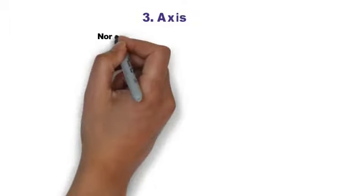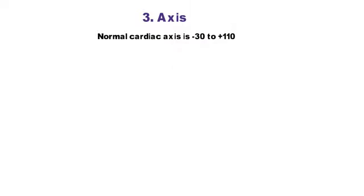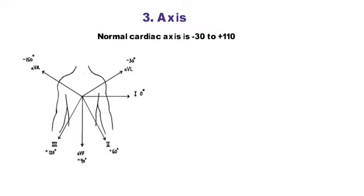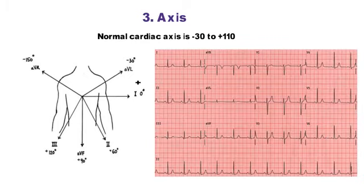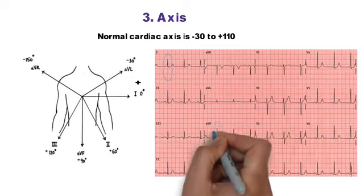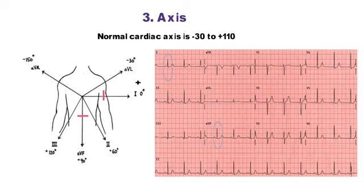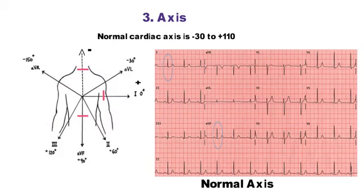Step 3 is to calculate the axis. Normal cardiac axis is from −30 to +110 degrees. The 12-lead ECG has 3 bipolar leads (lead 1, 2, 3), 3 augmented unipolar leads (aVR, aVL, aVF), and 6 chest leads (V1–V6). To calculate axis we use lead 1 and aVF. If net QRS is positive in both lead 1 and aVF, the vector falls in the normal axis range. If net QRS is positive in lead 1 but negative in aVF — and lead 2 is also negative — this is left axis deviation.